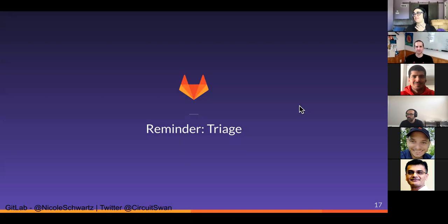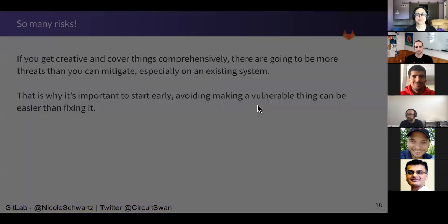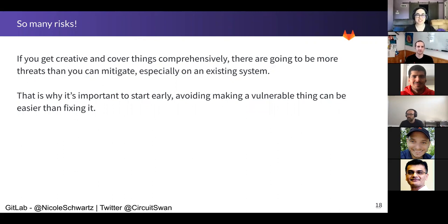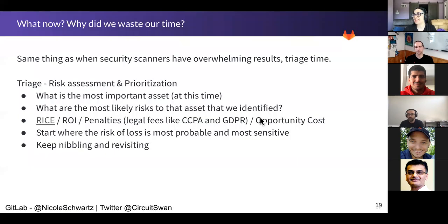So you've picked some kind of formal method or not, picked a tool or you're just using pen and paper — which is totally valid. You created a network diagram, you now have tons of ideas on a whiteboard or notecards. That's great, but there are so many. It's kind of like looking at the vulnerability list when you run a bunch of scans. It's important to start early so you can decide which ones you want to go after. Did we waste our time? Not really — it's the exact same thing you have to do when looking at a vulnerability list.